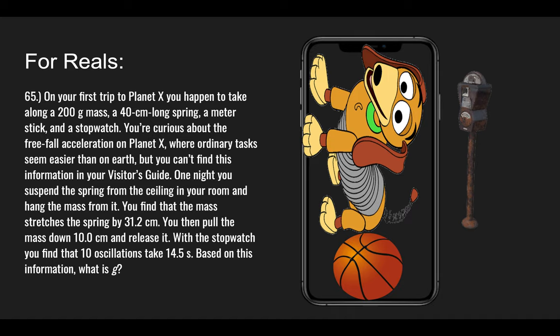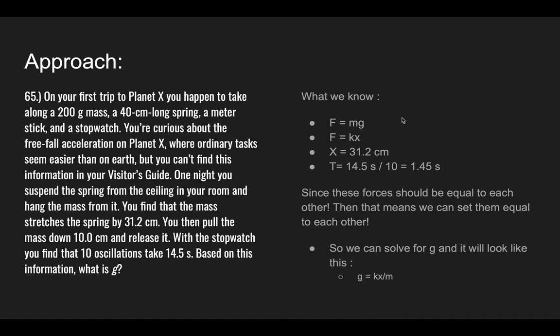Using this information, they want you to calculate the force of gravity. So here's what we do know. The force acting on the ball is going to be equal to mass times gravity, F = mg. Another force we know is the force of the spring, and we know that these two forces have to be equal to each other because it's stationary - the ball is not going anywhere, it's just going up and down. So mg equals the spring constant k times the distance x. We know that x is 31.2 centimeters, and we know the time per period T is 14.5 seconds divided by 10, because 10 oscillations take 14.5 seconds, so one oscillation will take about 1.45 seconds.